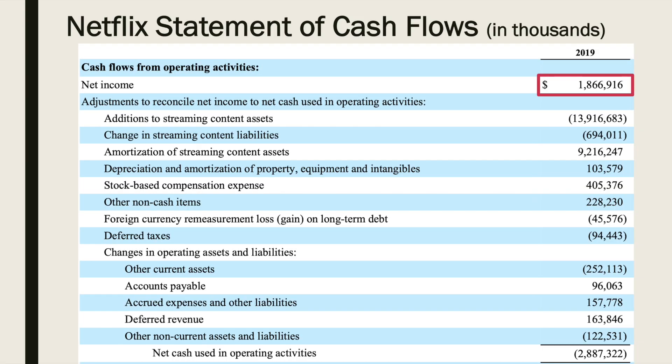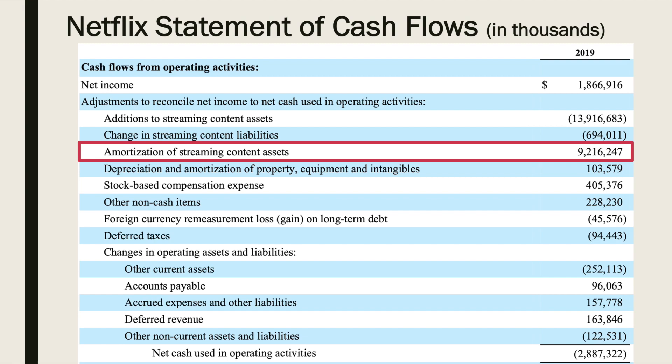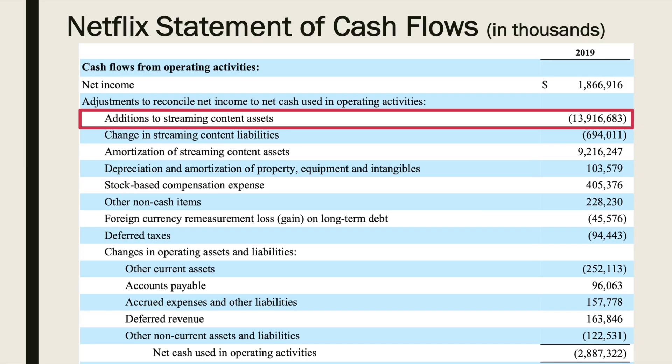For a company with net income and negative operating cash flow, we can look at Netflix in 2019. Netflix posted net income of $1.8 billion, yet operating cash flow of negative $2.8 billion — a difference of nearly $5 billion. This has to do with additions to streaming content assets. When Netflix pays to license or produce content, it capitalizes that cost as an asset. So while Netflix spent $13.9 billion of cash on content in 2019, it did not immediately expense $13.9 billion. Instead, Netflix expensed this amount over several years through amortization. That's why amortization of streaming content assets is added back to net income — it's a non-cash charge that reduced net income but had no effect on cash. The actual effect on operating cash flow was the $13.9 billion Netflix spent to license or produce content.